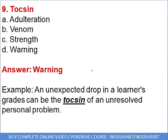Tocsin is a warning — when some danger is there, you get the warning. A tocsin is an alarm bell or signal which is provided. 'An unexpected drop in a learner's grades can be the tocsin of an unresolved personal problem.' If somebody's grades are unexpectedly falling, that can be the tocsin — the alarm, the warning sign — of an unresolved personal problem. This learner has an unresolved personal problem, and the falling grades are the warning signal. Tocsin is warning or an alarm bell or signal.